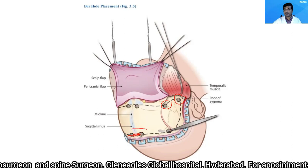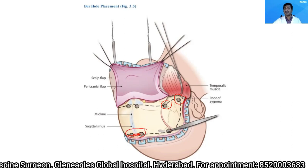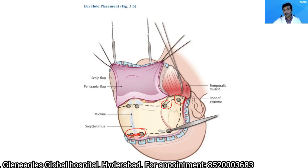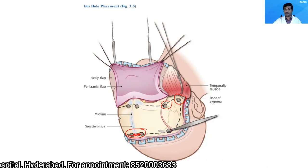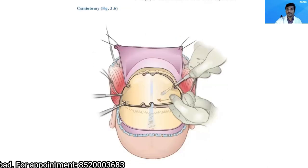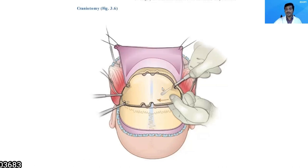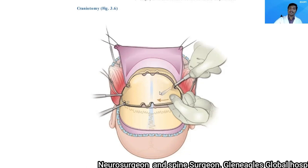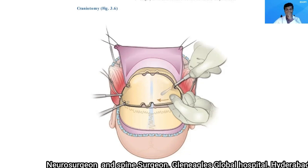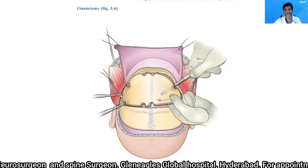This midline connection is performed last — only after connecting all other burr holes with the craniotome. Once the craniotome run is complete and the frontal sinus has been addressed, reflect the bone flap back.